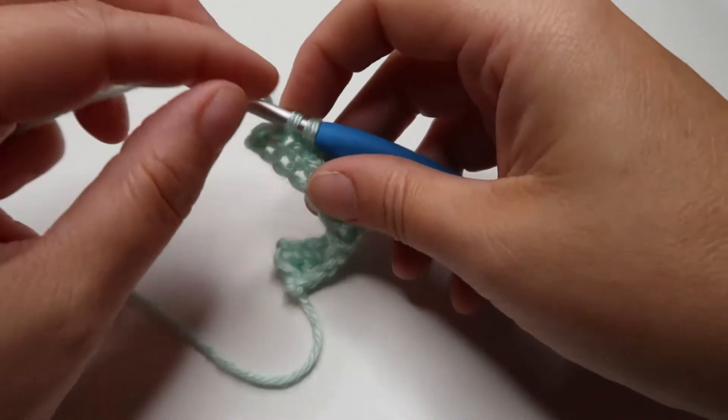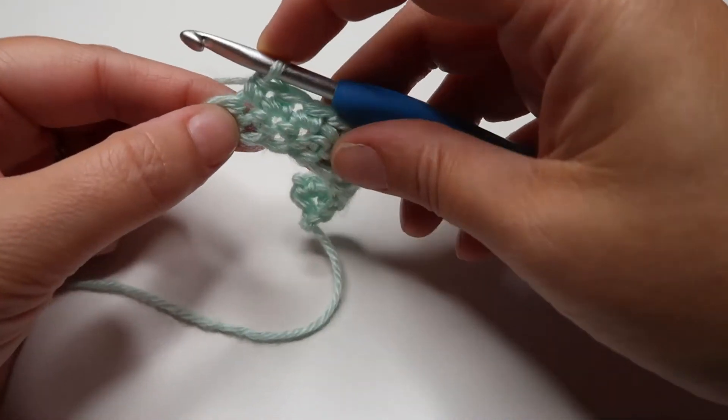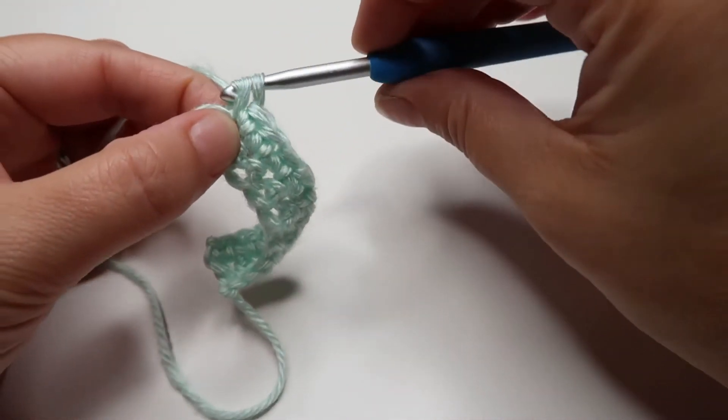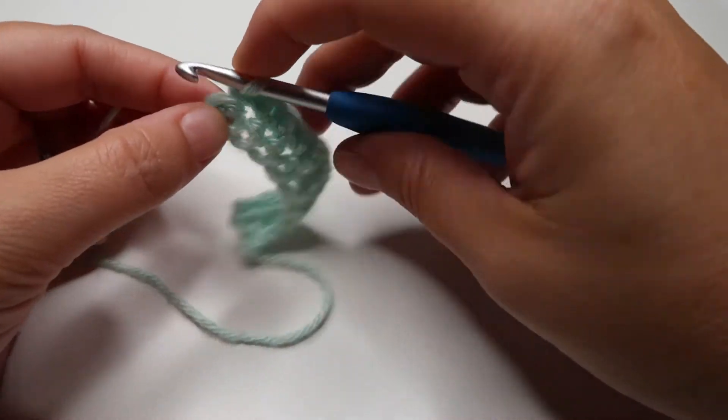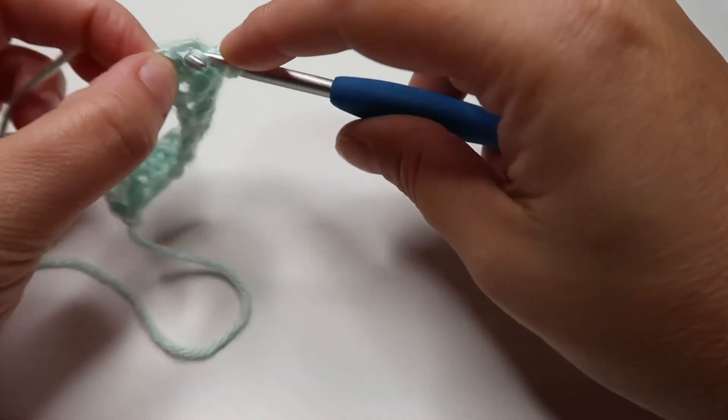So one single crochet in the same stitch, you can do another one. Two. And that's how easy increases are. Then we'll do a single crochet in the last stitch.